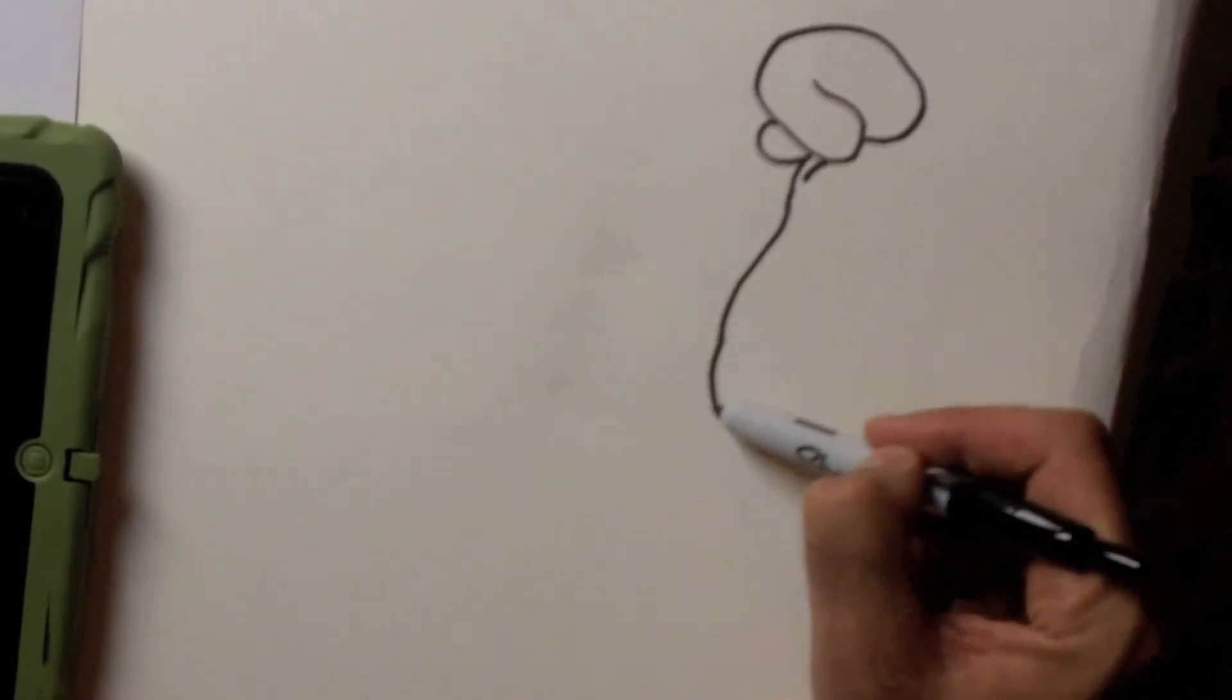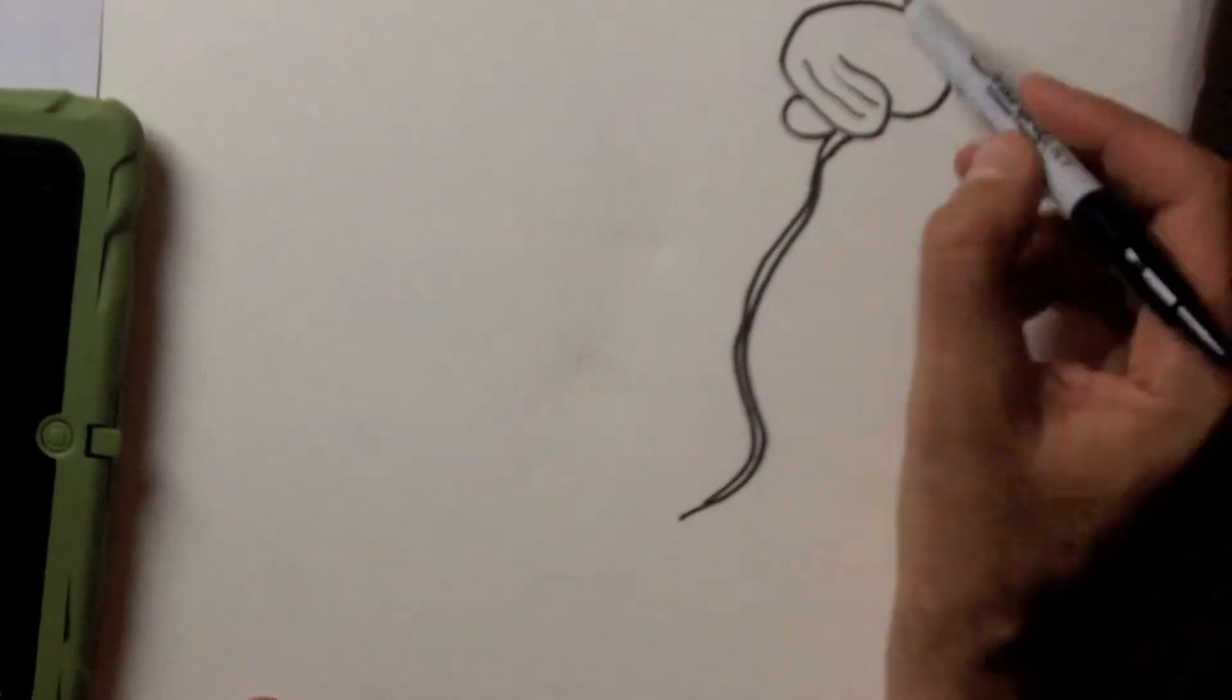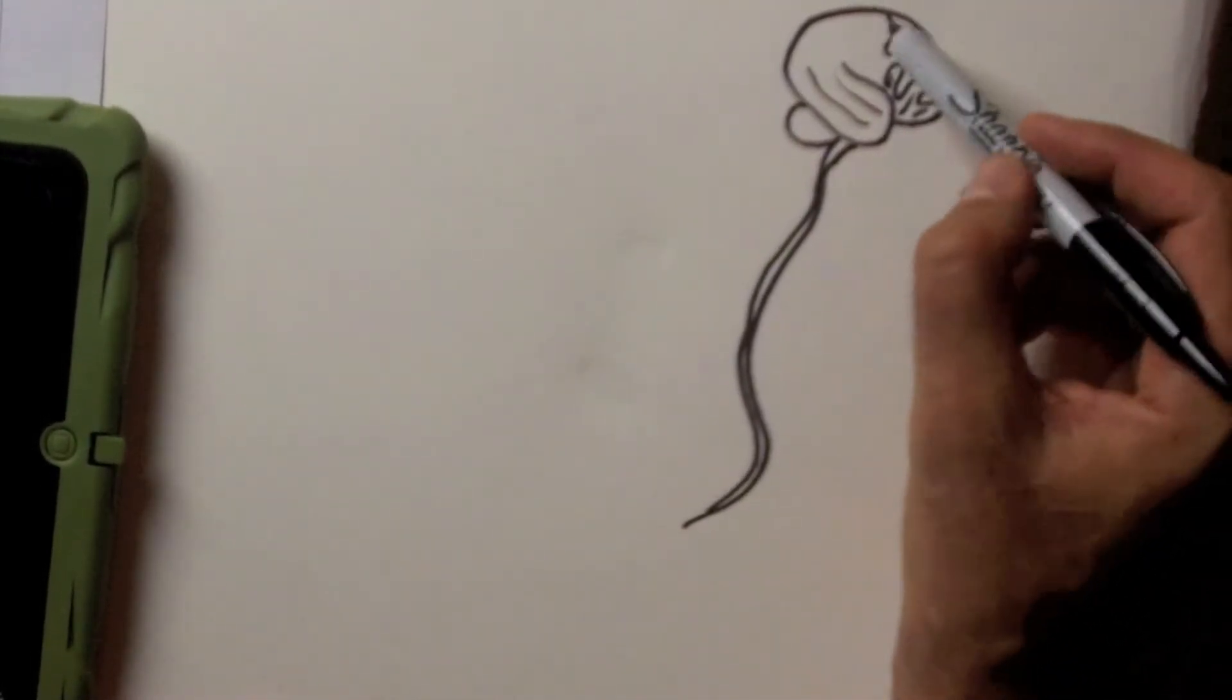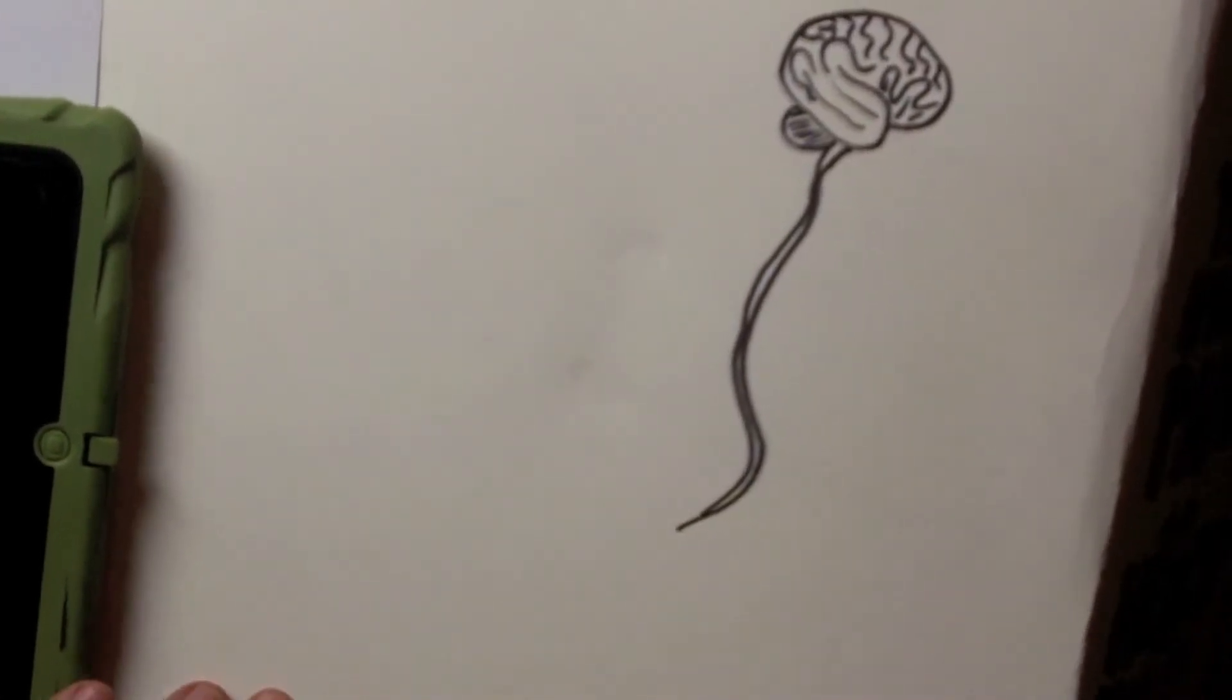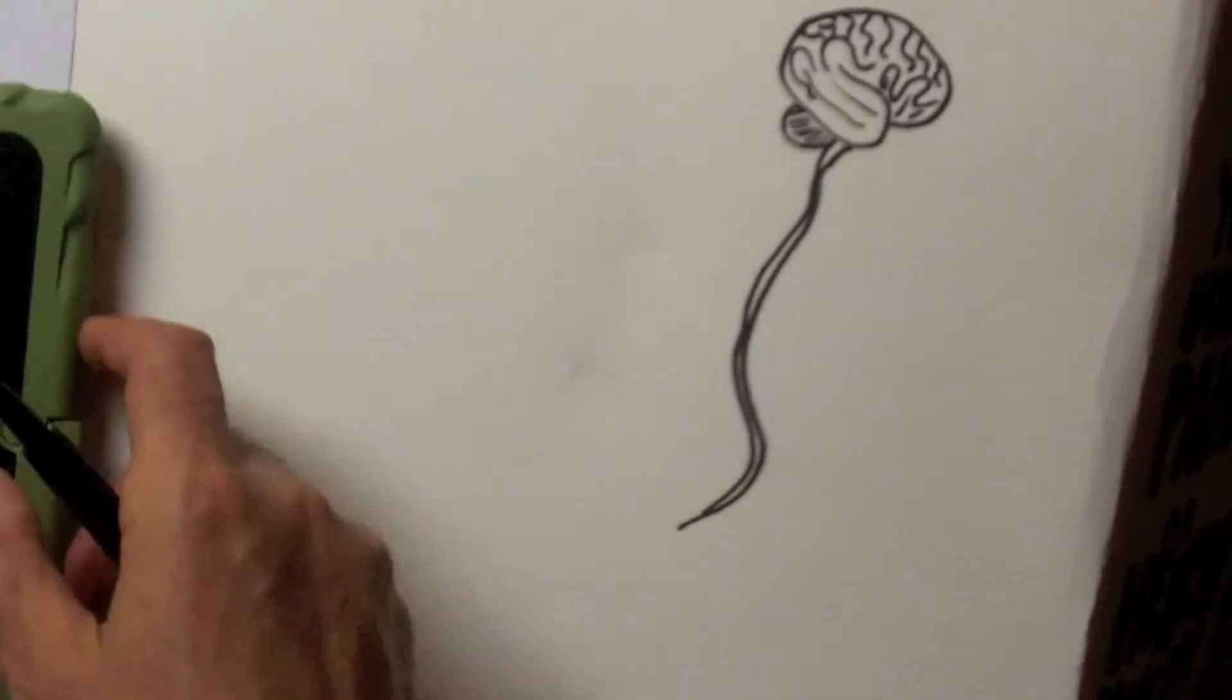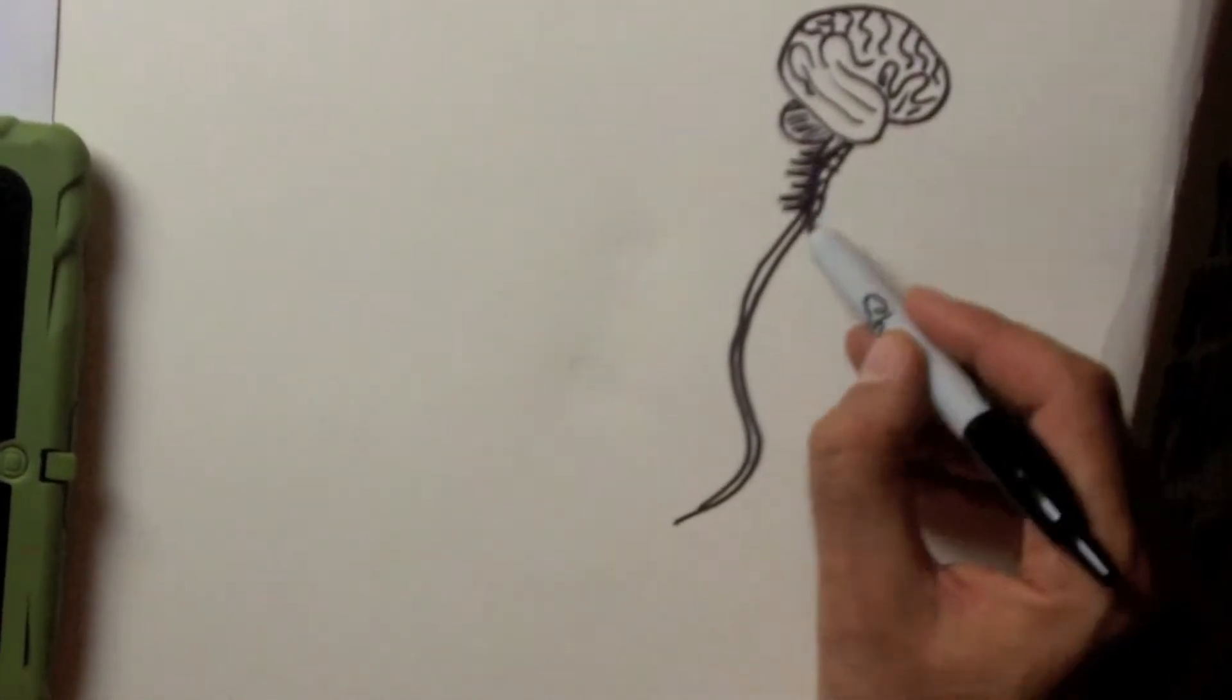You see, your brain controls everything in your body. Here you can see the brain and right below is the spinal cord that connects the brain like a cable to 31 pairs of spinal nerves that basically go everywhere in the body.